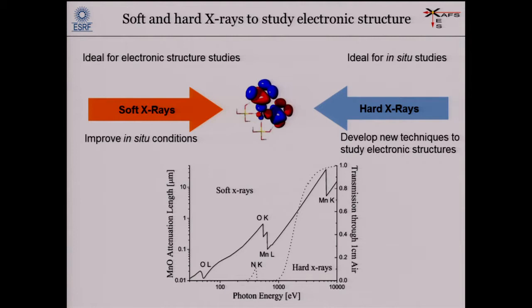You will also hear speakers later this week who talk mainly about soft X-ray spectroscopy. Hard X-rays start above roughly 5,000 electron volts; soft X-rays are at lower energies. If you want to study electronic structure, in principle you want soft X-rays because the line broadening is smaller. In 3D transition metals you can see the structure of the 3D orbitals directly by 2P to 3D absorption. However, if you want to do experiments under in-situ or extreme conditions, you want hard X-rays because of their larger penetration depth.